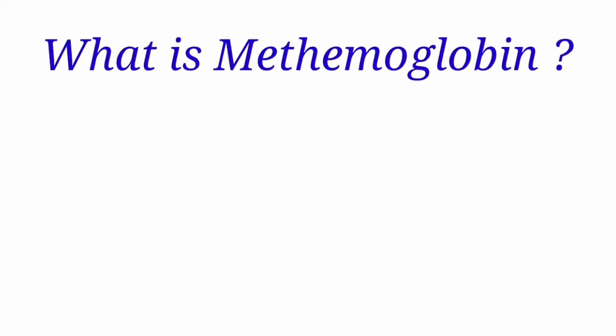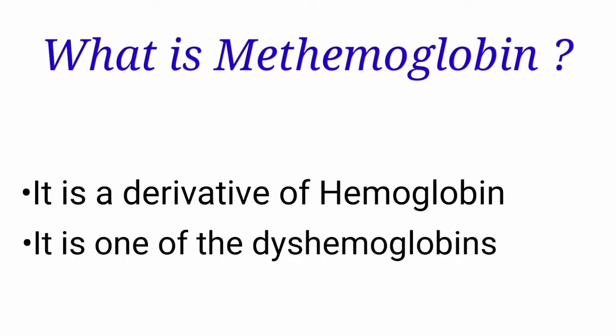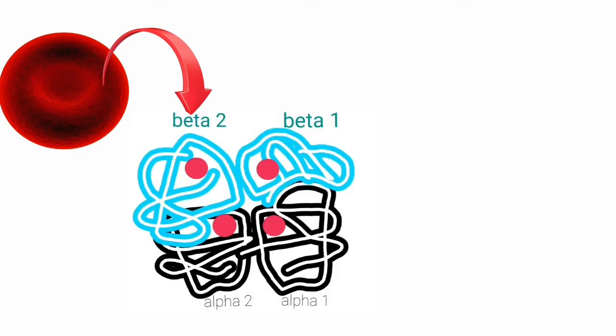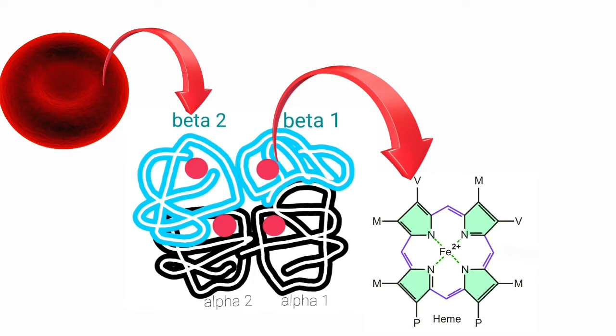What is methemoglobin? Methemoglobin is a derivative of hemoglobin and it is one of the types of dishemoglobins. There are three species of hemoglobin normally present in trace amounts. These three species are called dishemoglobins: carboxyhemoglobin, sulfhemoglobin, and methemoglobin. The adult hemoglobin molecule HbA comprises four polypeptide chains — 2 alpha, 2 beta — and each of these polypeptide chains has a porphyrin heme group attached. At the center of each of the four heme groups is an atom of iron in the ferrous state. The four iron atoms are the functional centers of the hemoglobin molecule because it is here that oxygen reversibly binds to form oxyhemoglobin.